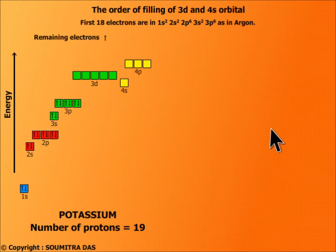I will fill up electrons in the first element potassium of the fourth period. It has 19 protons. The filling up of first 18 electrons just follow the same rule which we followed in the case of Argon. Now the 19th electron will go to 4s as you all know that 4s energy is lower than 3d.